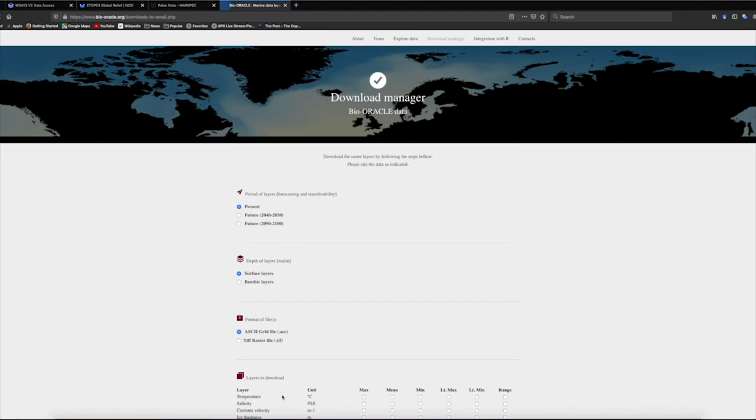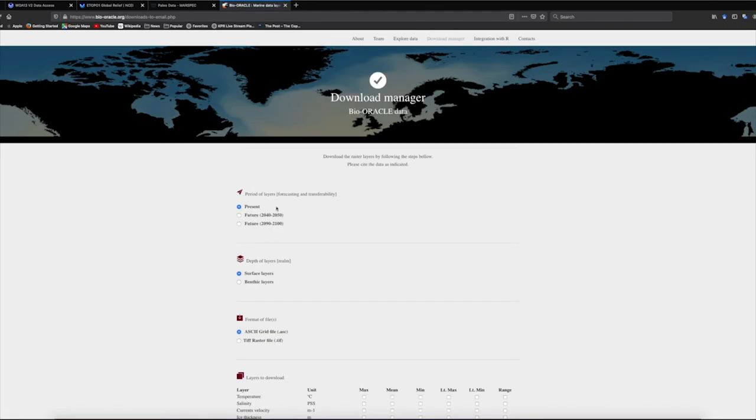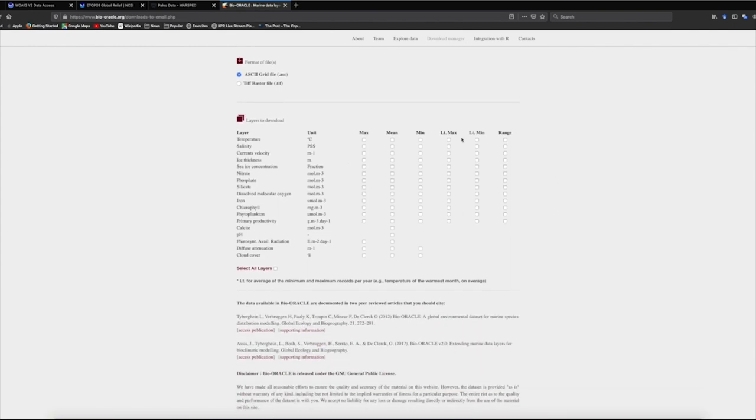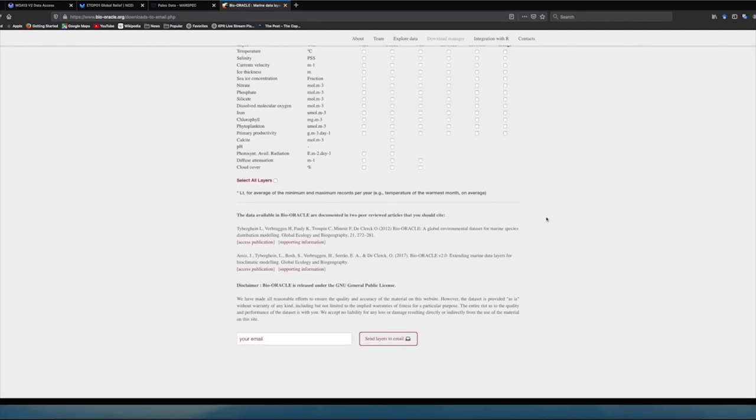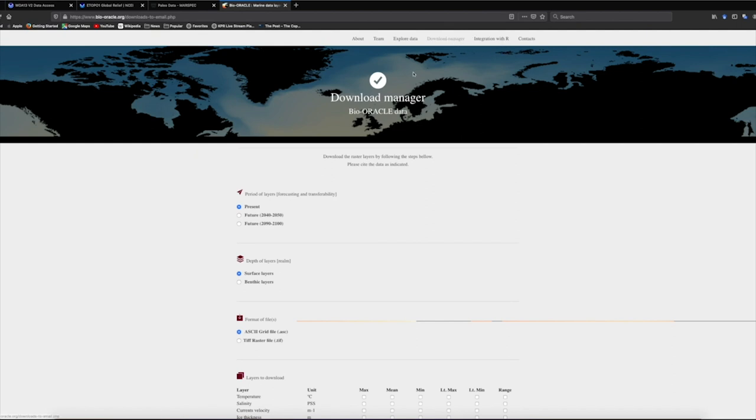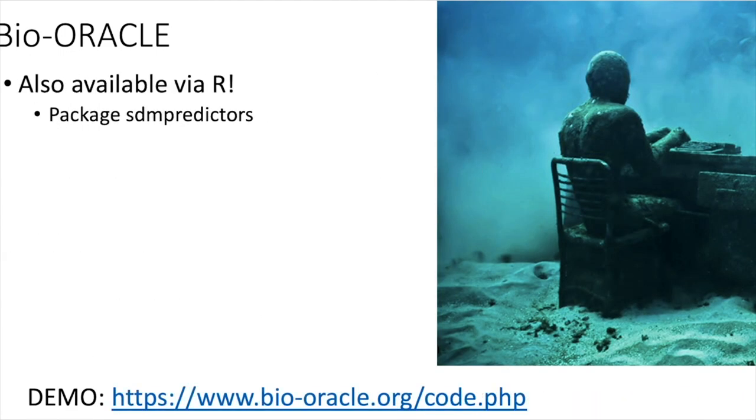So let's take a look at what that looks like. So here you see you can choose whether you want present, future that ends at 2050, or future that ends at 2100. You can choose surface or benthic layers. And then you can choose whether it's an ASCII or a GeoTIFF. And then you have all of these available measurements. Temperature, salinity, current velocity, ice thickness, which is a nice one if you're working with temperate or arctic species. Sea ice concentration is another good one. Nitrate, phosphate, silicate. These all look familiar. And so you can see this is another really nice, very useful, fairly diverse data set with fairly good coverage. And it's integrated with R. So if you're interested in that, I highly recommend you check out this website and see how that works. As I said, also available in R. The package is called SDM predictors. So if you're interested, you can explore that package.